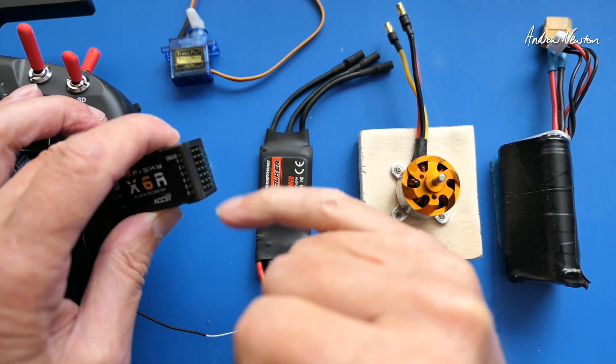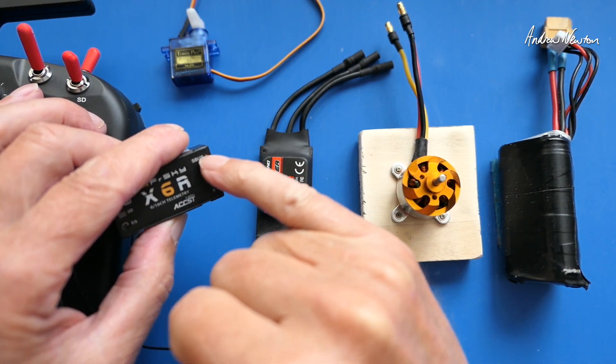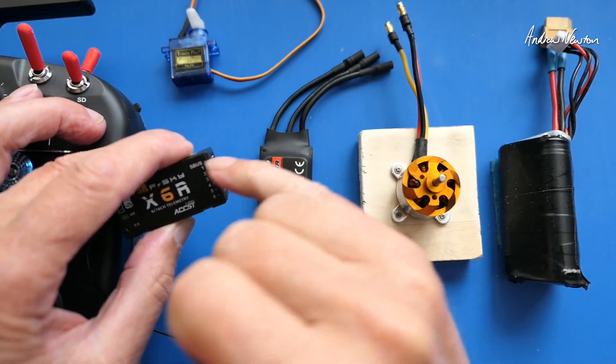This is a PWM receiver as well as a serial receiver so PWM means that we have separate channels broken out onto separate sets of pins. Serial receiver means that all channels are sent down one cable.